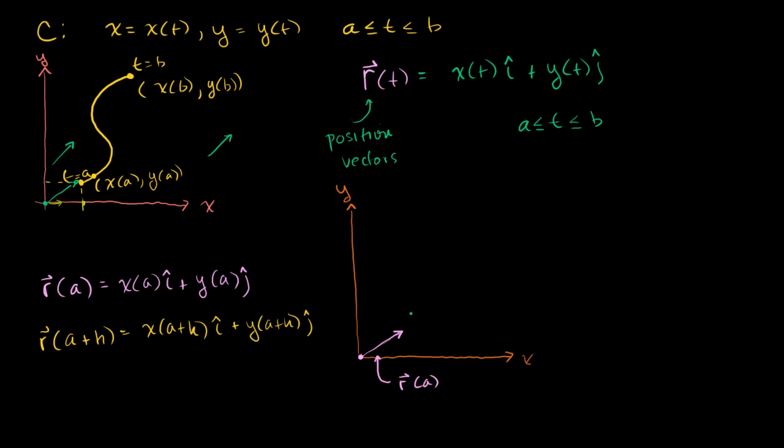necessarily have length one. That might be right here. Let me do that same color. So it might be just like that. So that right here is R of a plus h. So you see,